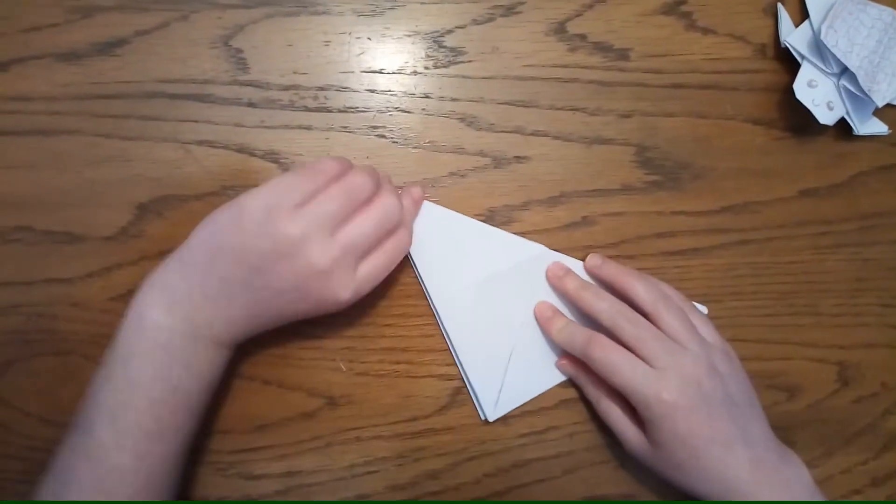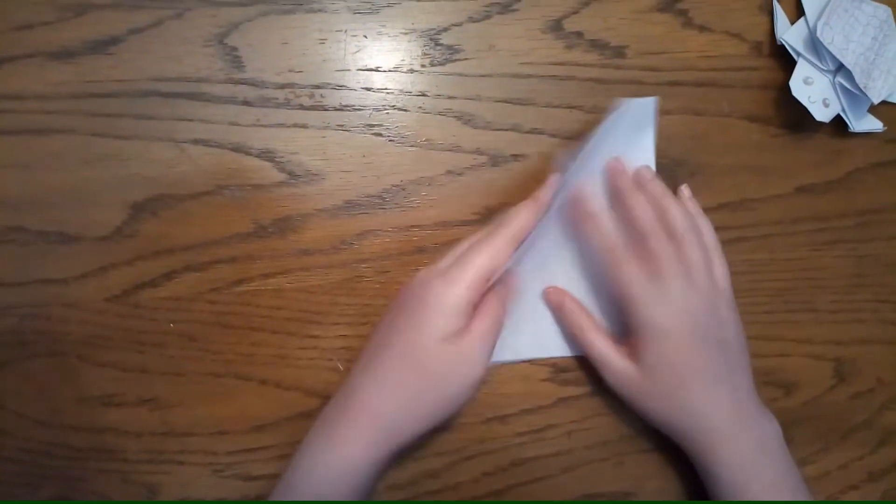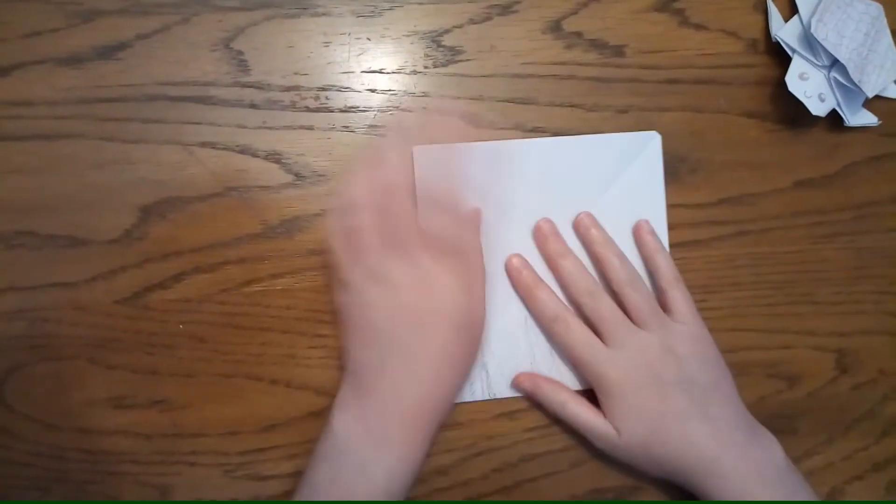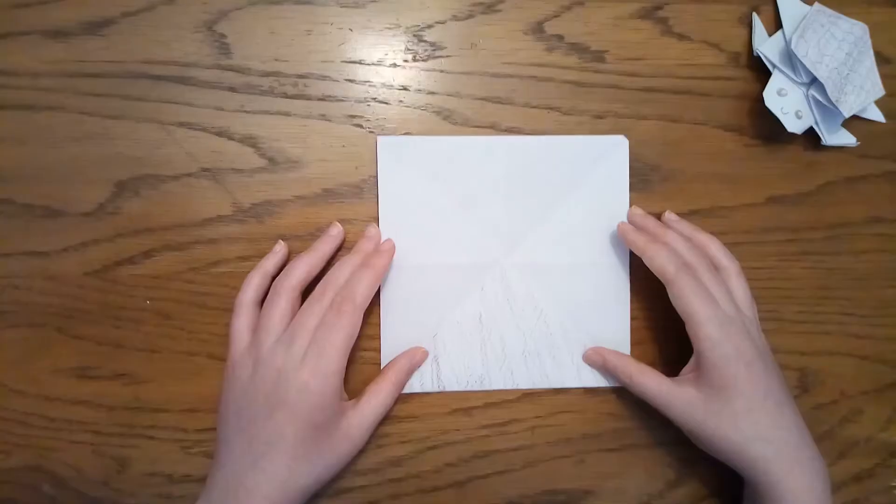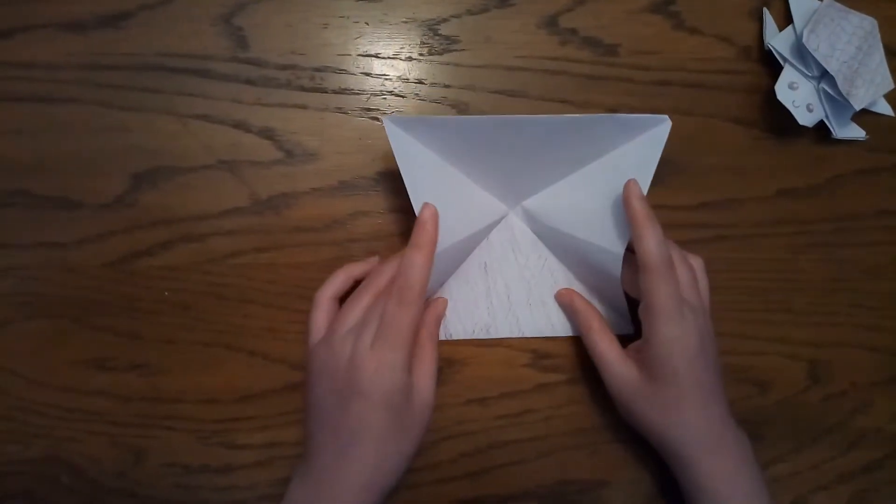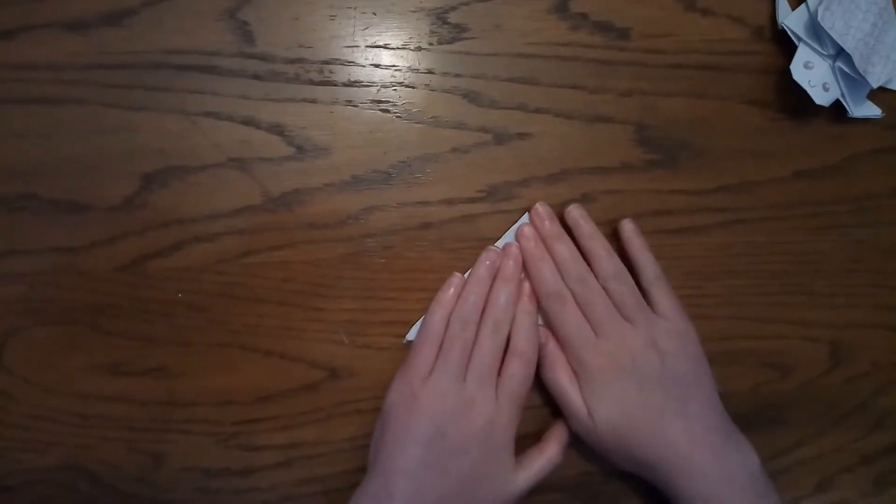This is just to reinforce those folds. We'll fold it in like that. Make sure it's nice and flat. Do the same over here as well. So then after that, what you're going to do is you're going to kind of bring these sides in here and then press it down so that you have a triangle there.